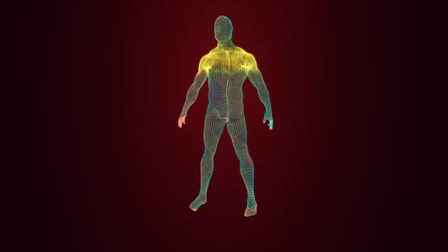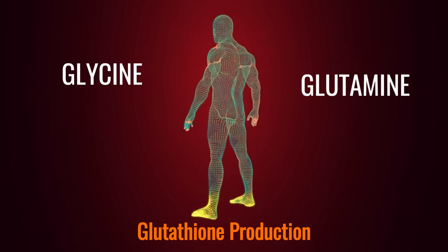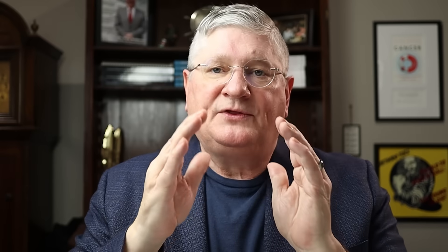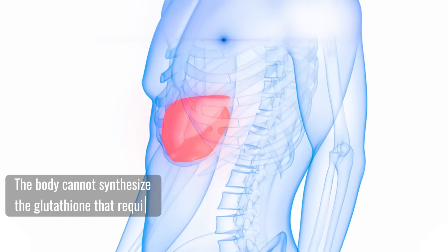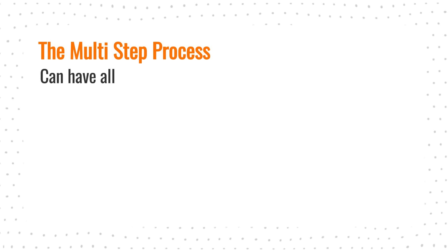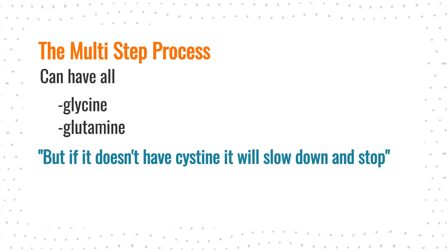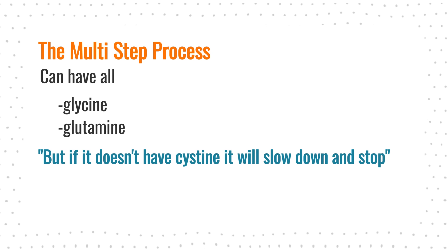Your body can have glutathione production through glycine and glutamine from the body or diet. But without cysteine in the body, it cannot synthesize — mostly in the liver — the glutathione that it requires. The multi-step assembly process can have all the glycine and glutamine it wants, but if it doesn't have enough cysteine, it will slow down and basically stop.